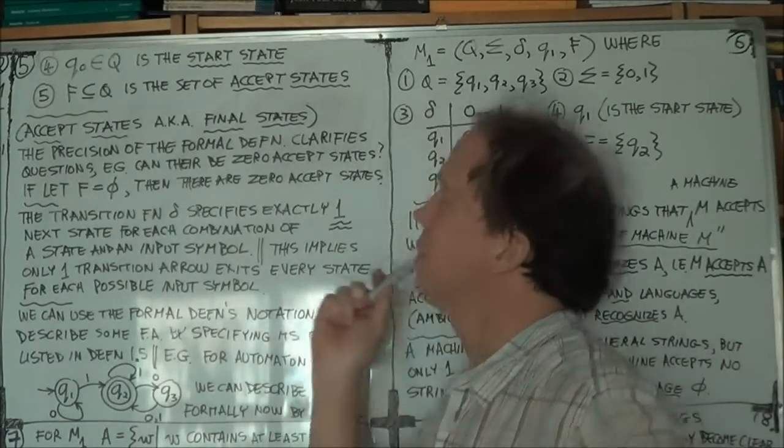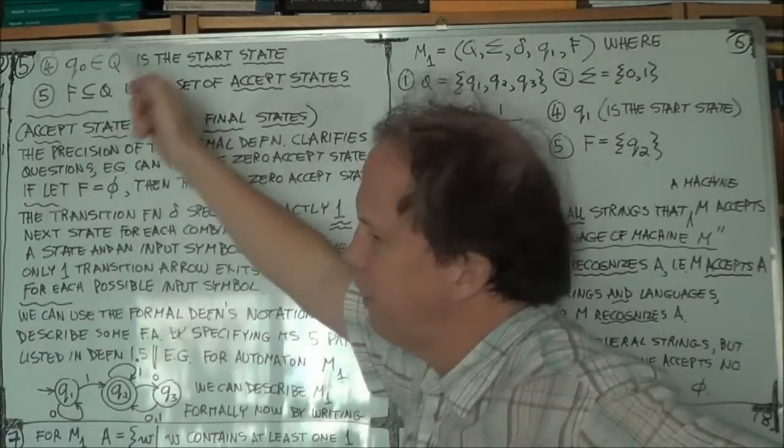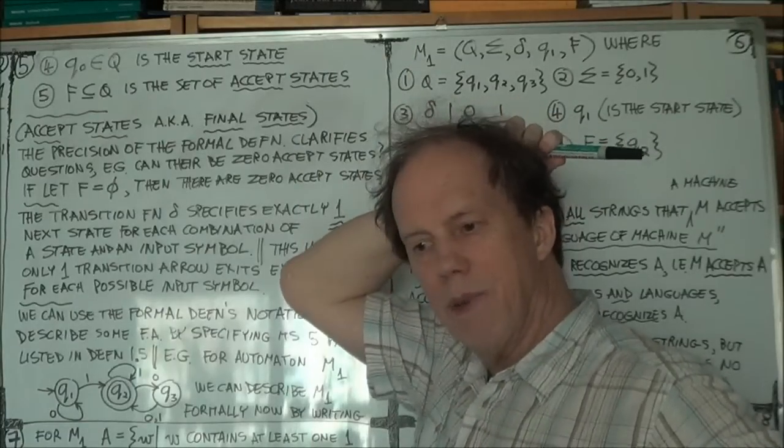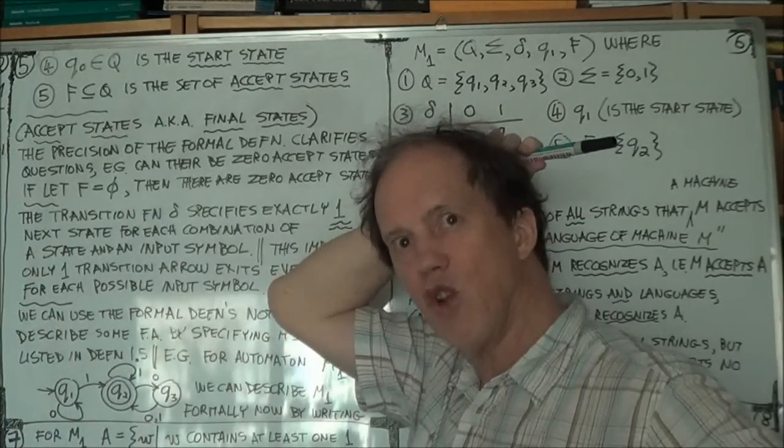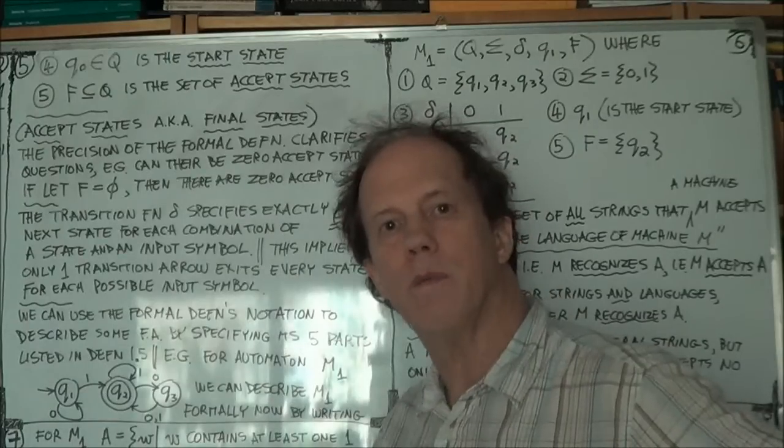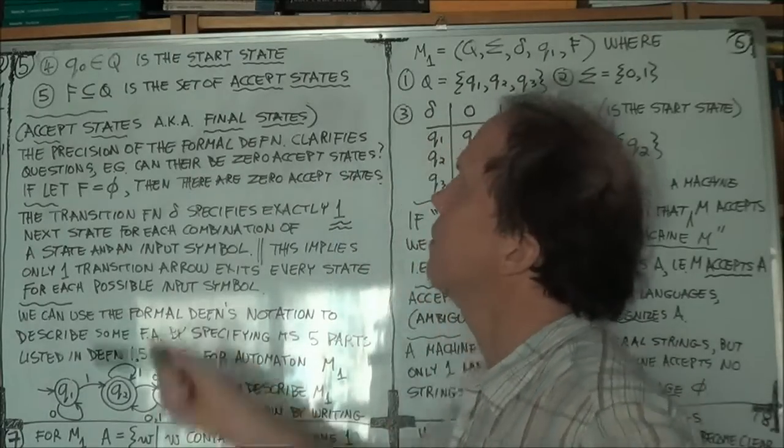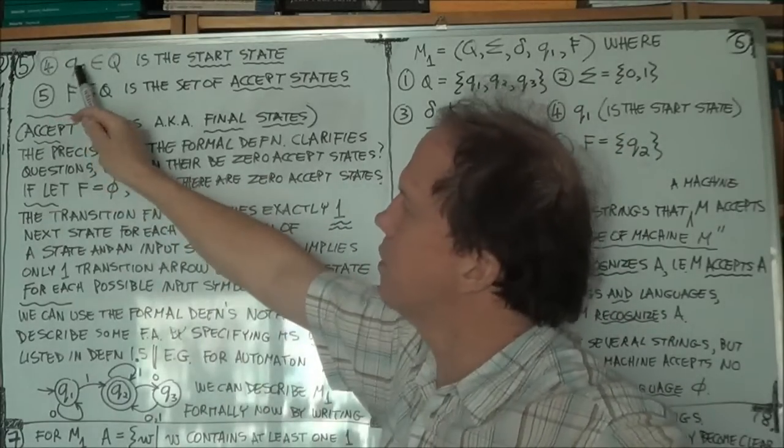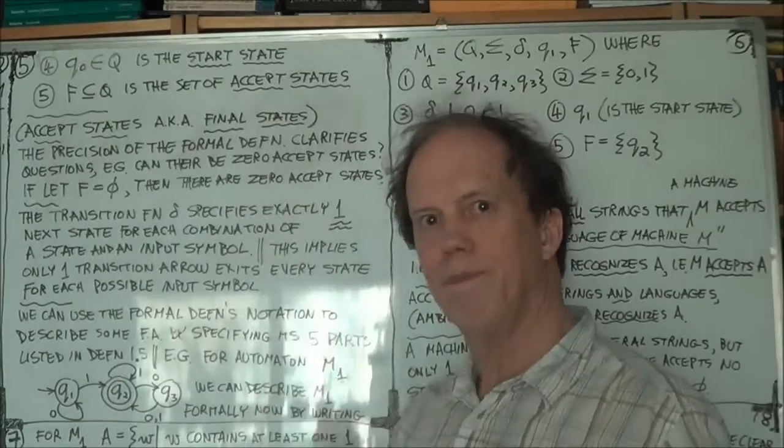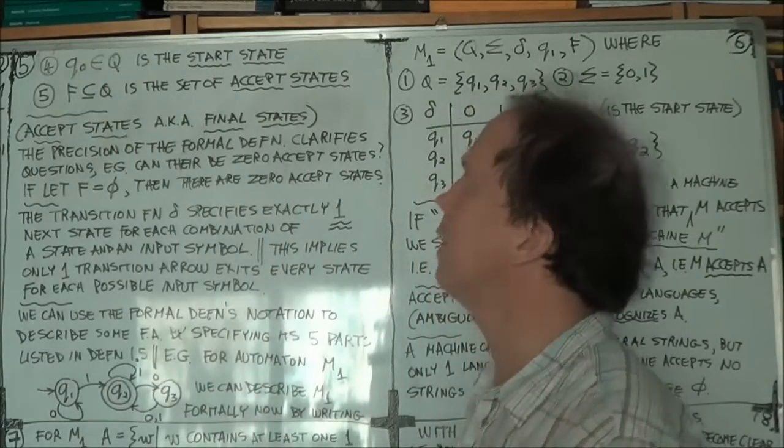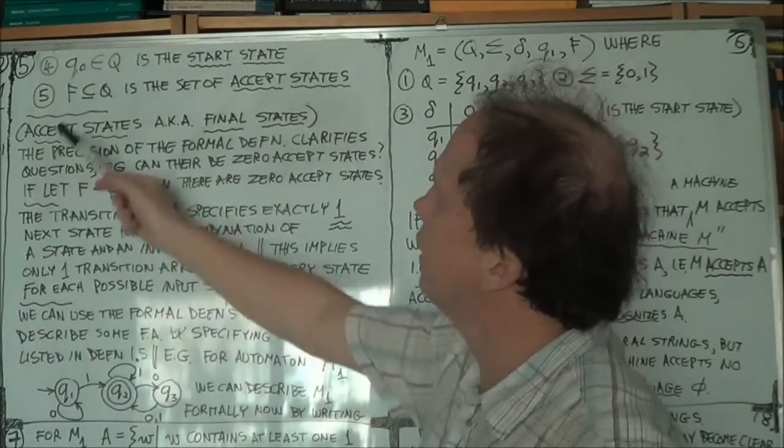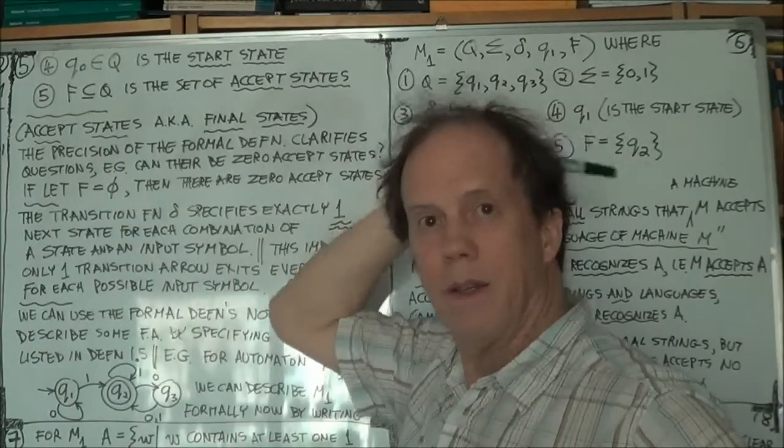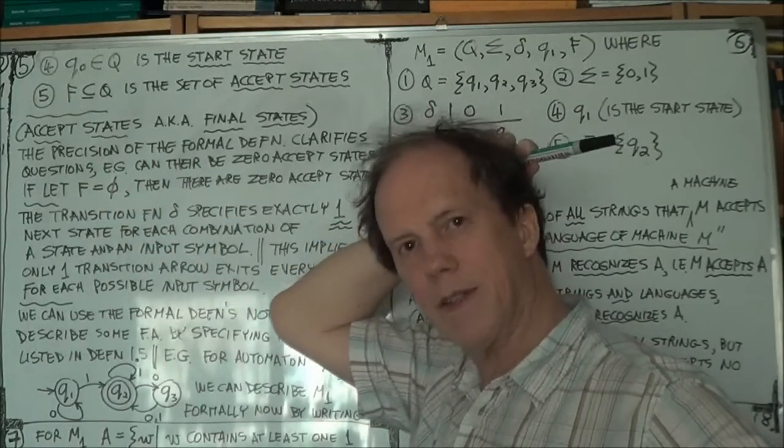At the end of the last session, I mentioned the fourth and fifth members' terms in the formal definition. So this is your start state, just one, in an automaton, just one start state. And five, F, capital F, that's the set of accept states.